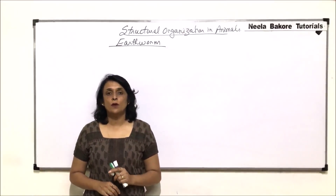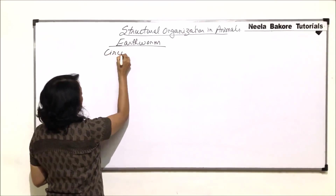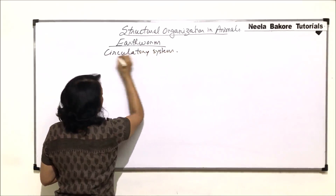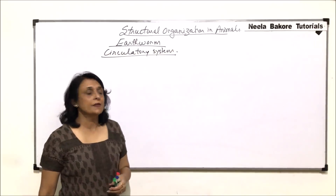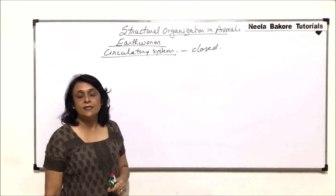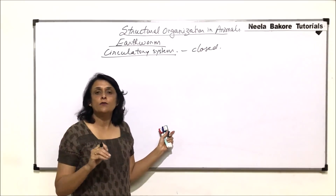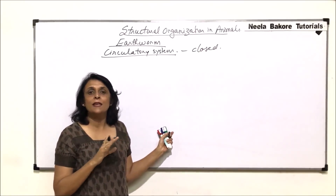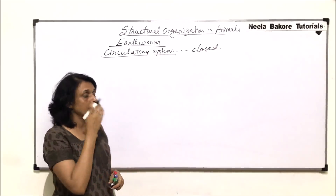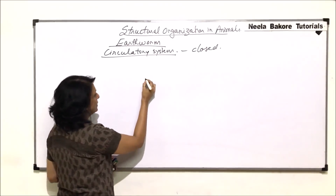In this video, we will be talking about the circulatory system in earthworms. In earthworms, the circulatory system is a closed type, meaning the blood remains confined in the blood vessels and flows through a network of blood vessels. There are many blood vessels, so we will look at the lateral view to see all the vessels.